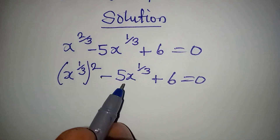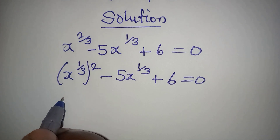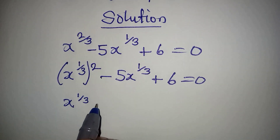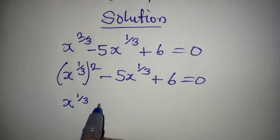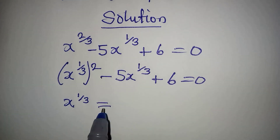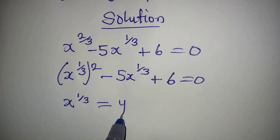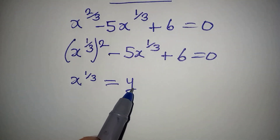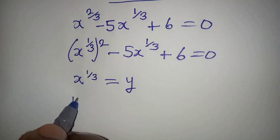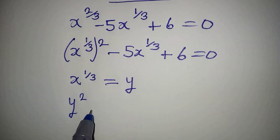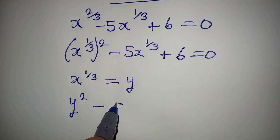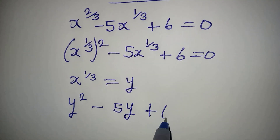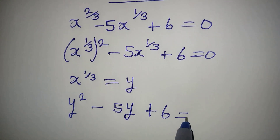Now what do we do? Let us replace x to the power of 1 over 3 — let this be equal to y. So that if x to the power of 1 over 3 equals y, then we will have y squared minus 5y plus 6 equal to 0.